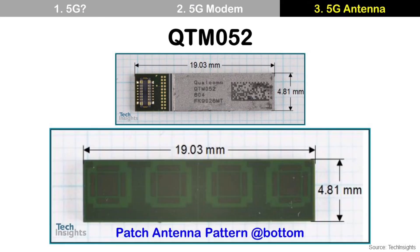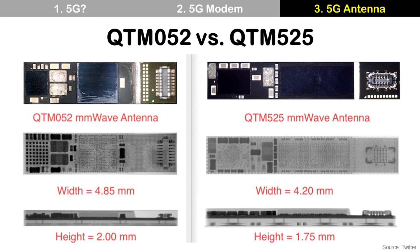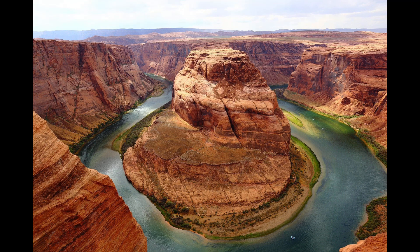The die patterns of those dies look like this, and the transceiver die is more complex than the PMIC. If you look at the bottom of the 5G antenna module, you can see four square-shaped patterns — those are patch antennas, which transmit and receive the 5G signal. This is a comparison between the QTM052 in 2018 and the QTM525 in 2019. The QTM525 is smaller because the latest smartphones need more space for other packages and a larger battery. Thanks for watching, and have a nice day — bye bye!